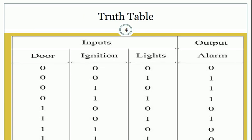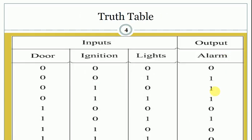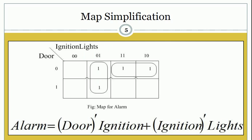Now, after getting the truth table, we will simplify the output function. There is only one output which is alarm. We simplify this function. The output of alarm is equal to one for minterms one, two, three, and five. That's why we will put one in positions one, two, three, and five in the map.